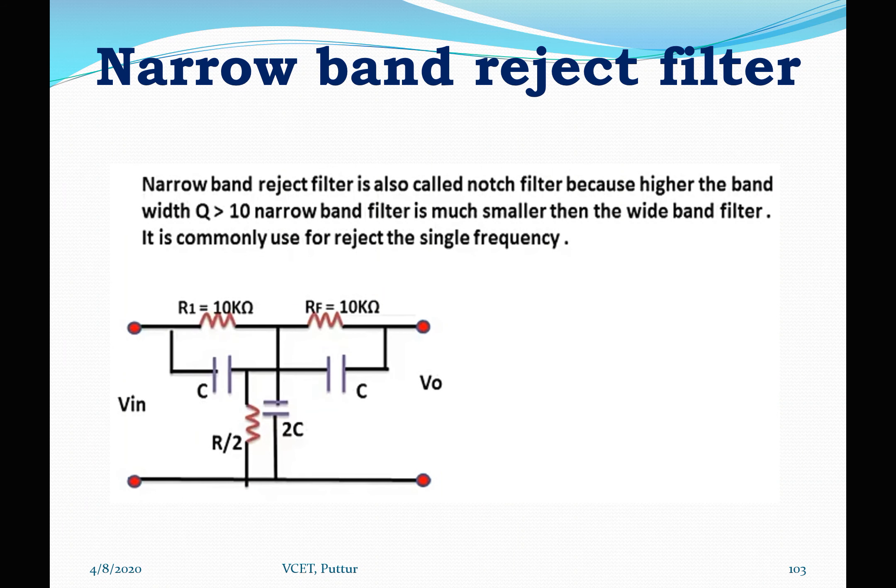The narrow band reject filter, also called a notch filter, is used mainly for rejecting a single frequency, such as the 60 Hz power line frequency. At one particular frequency, the signal is rejected. Because Q must be greater than 10, the bandwidth is much smaller than the wide band filter, and it is commonly used for rejecting a single frequency hump.